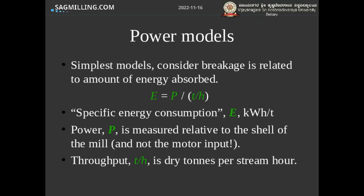The first large class of models are collectively known as the power models. These are the simplest models used quite commonly to describe grinding in an industrial sense. They relate to the specific energy consumption E, which is equal to the power draw of the motor expressed as the mechanical power at the shell of the mill divided by the throughput in tons per hour of finished product. The specific energy consumption is usually measured in kilowatt hours per ton.